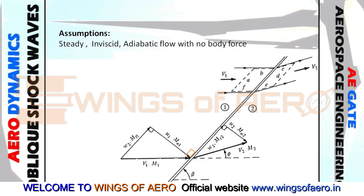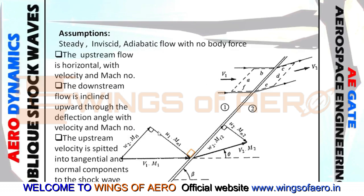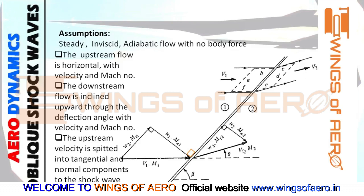This is the upstream flow where the upstream flow is horizontal — with horizontal velocity and horizontal Mach number. This side is the downstream, where the flow is inclined at angle theta in the upper direction. Along with this direction, the velocity as well as Mach number follow. In both upstream and downstream, the velocity is split into two components: one is a tangential component and one is a normal component.